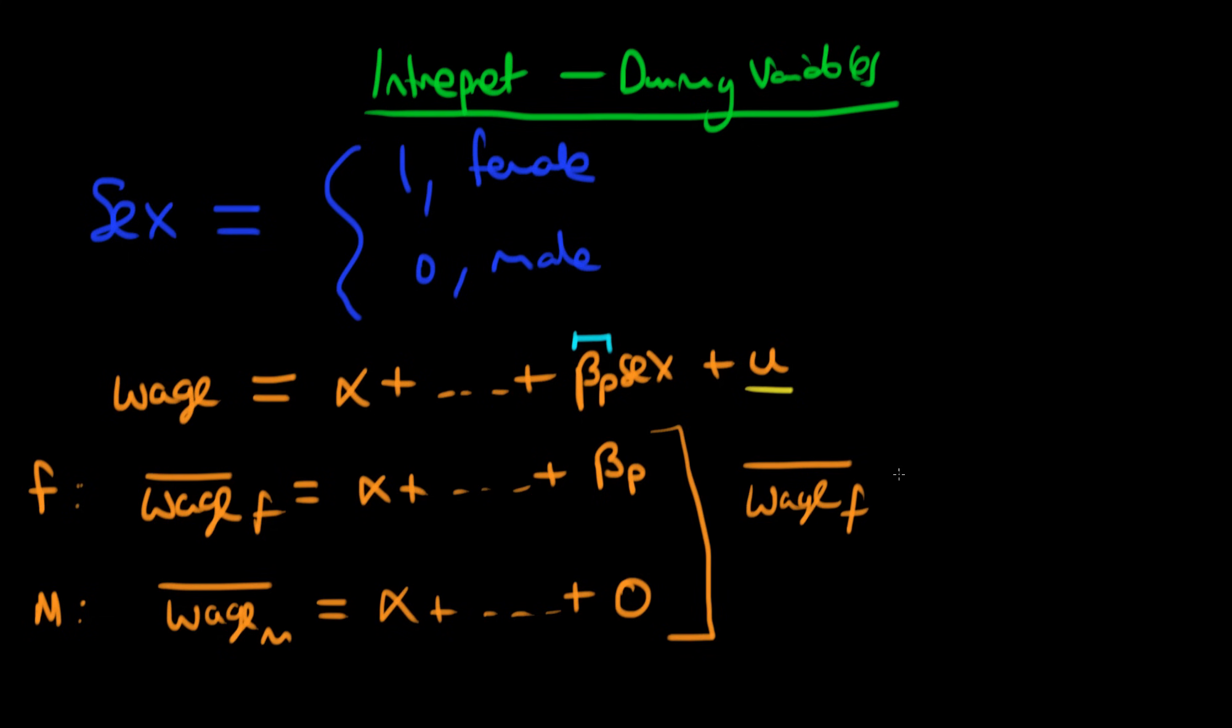So the idea here is that if I take the average wage rate for females and take away the average wage rate for males, then all these other variables which are being held constant are going to cancel. So I'm just going to be left with β_p.